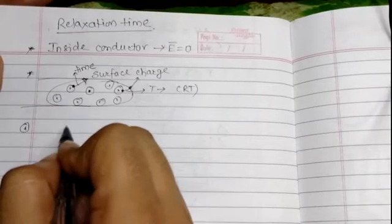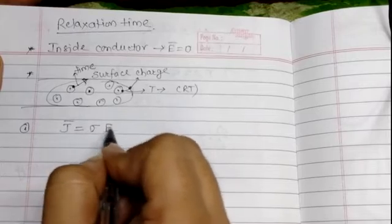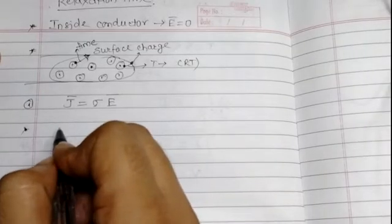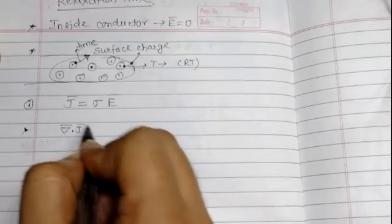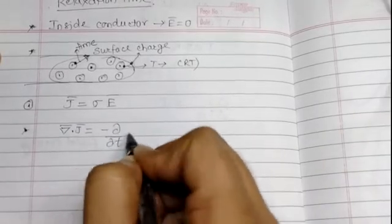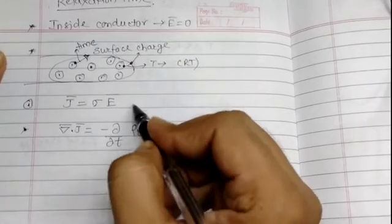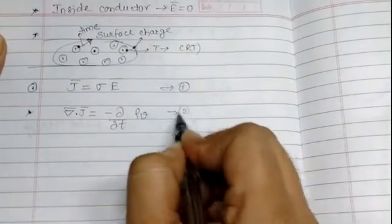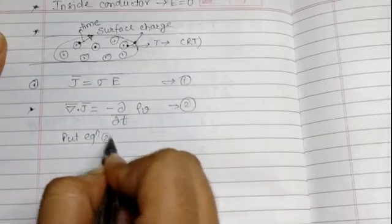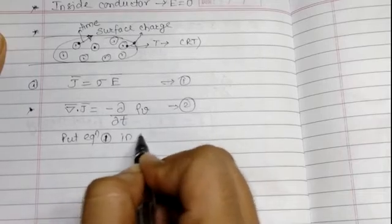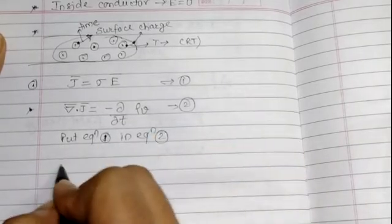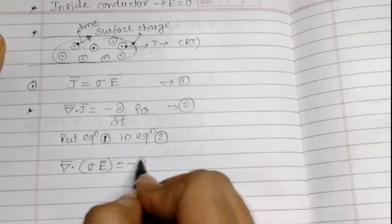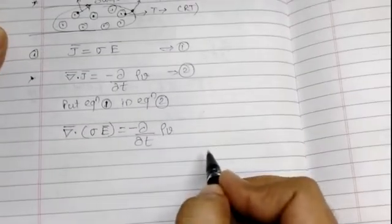Point one: Ohm's law applied to field theory is given by J-bar equals sigma times E-bar. Point two: as per the current continuity equation, we have del-bar dot J-bar equals minus del-rho-V by del-t. Substituting equation one into equation two, we get del-bar dot (sigma times E-bar) equals minus del-rho-V by del-t.